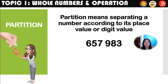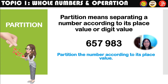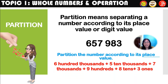Now let's partition 657,983 according to its place value. Place value means we write words, not digits. When we partition by place value, we write the digit in front followed by the place value name: 6 hundred thousands + 5 ten thousands + 7 thousands + 9 hundreds + 8 tens + 3 ones.